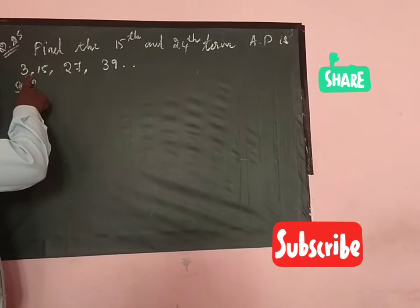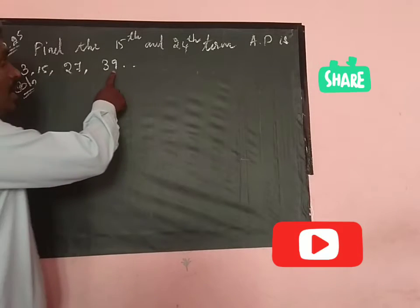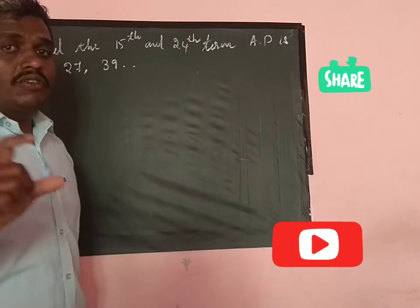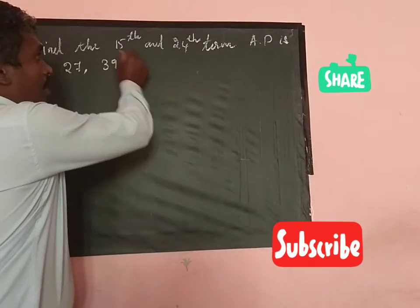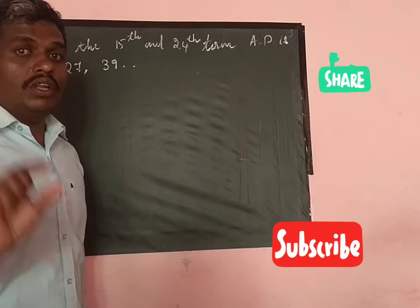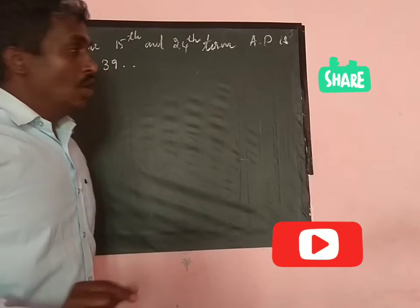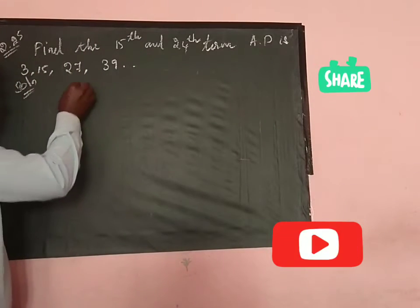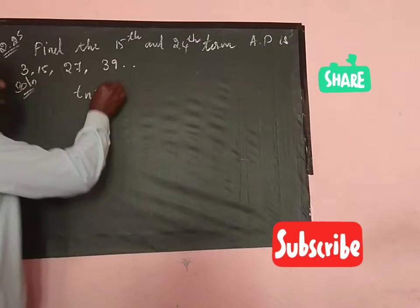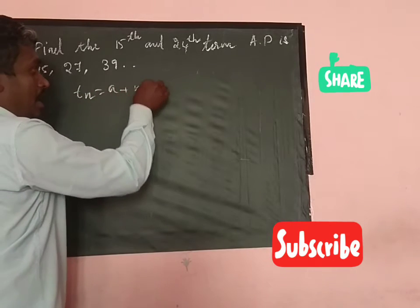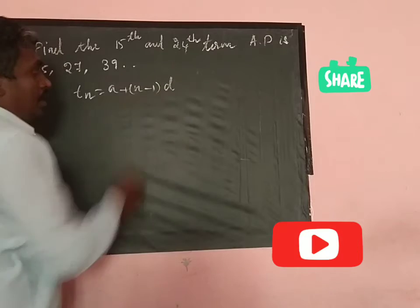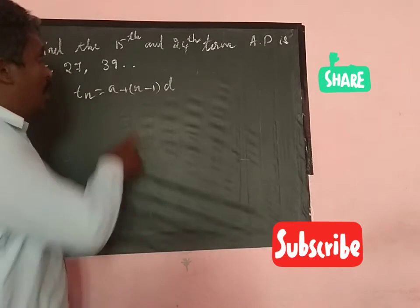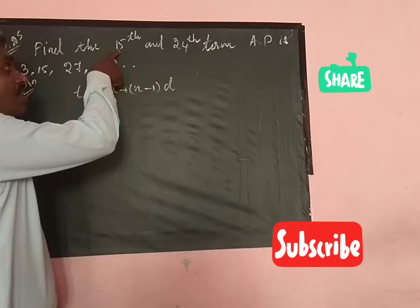The given AP is 3, 15, 27, and 39. To find a particular term, we have a formula: tn = a + (n-1) × d.